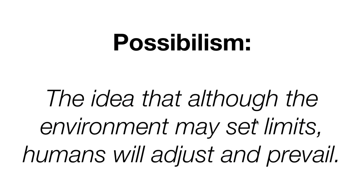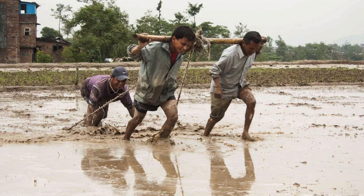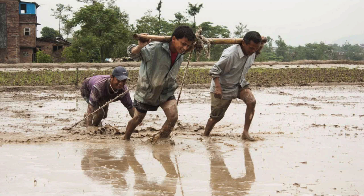Possibilism is the idea that although the environment may set limits on humans, humans will always adjust and always prevail. Possibilism is also known as environmental possibilism. When I think of it, it helps to think of people trying as hard as they can to do agriculture in an area that at first glance doesn't seem suitable — still, humans will try and prevail.